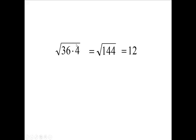Now watch what happens if I split this into two square roots. We'd have the square root of 36, and then times the square root of 4. Well, the square root of 36 is 6, and the square root of 4 is 2. And when you multiply them, you get the same answer.